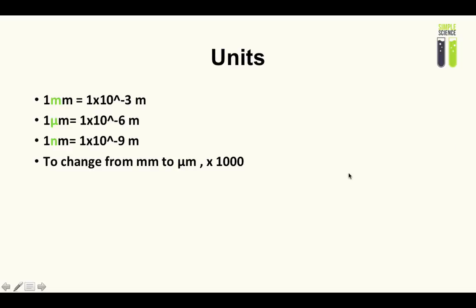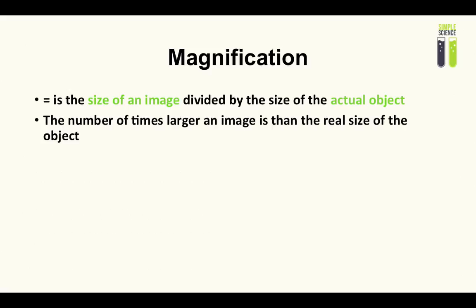We can now move on to magnification. For all you biologists, remember this definition — it could get you marks. Magnification is the size of an image divided by the size of an actual object. In simple terms it's basically the zoom — how zoomed is the object. But don't write that in your exam; you have to write the formal definition, or in other words, the number of times larger an image is than the real size of an object.